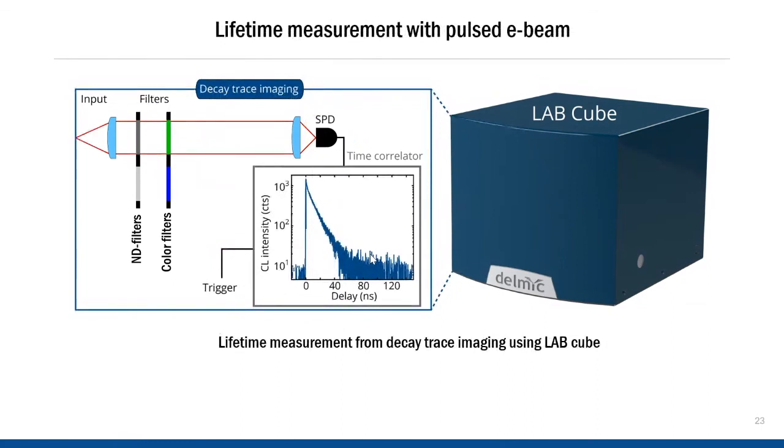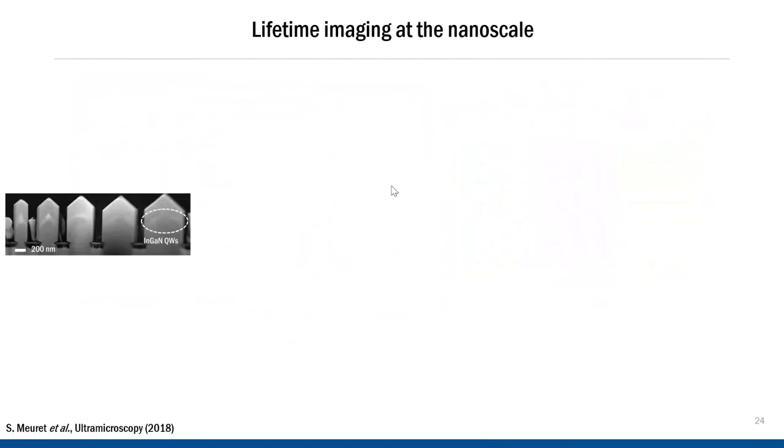The second method for lifetime measurement is called time correlated single photon counting. It requires a pulsed electron microscope. This is also set up using the lab cube, as I described earlier for the G2 imaging, but the difference is that you only use one single photon detector together with this time correlator. Now, since this method requires electron pulses and electrons repel each other, you can only use low currents of the order of 10 picoamps in this mode. Higher currents would create undesired space charge effects. So this mode is also quite slow, and you need to acquire often for several hours.